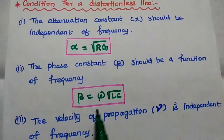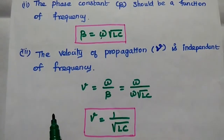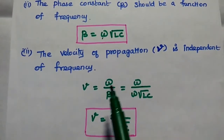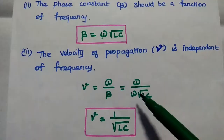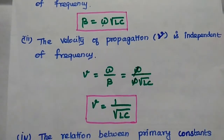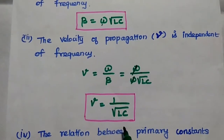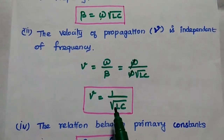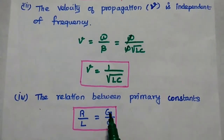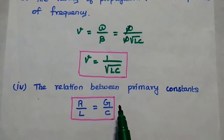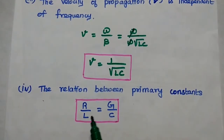Here, beta is a function of frequency. The third important condition is the velocity of propagation is independent of frequency. As we know, V is equal to omega by beta; substituting the value of beta, omega divided by omega cancels, and we get velocity of propagation equal to 1 by square root of L into C, which is independent of frequency. Since it is independent of frequency, there is no phase distortion. The last condition is the relation between primary constants of the transmission line. For a distortionless line, it should satisfy R by L is equal to G by C.